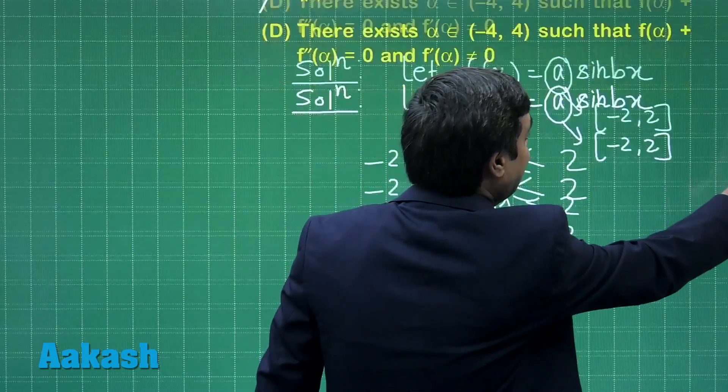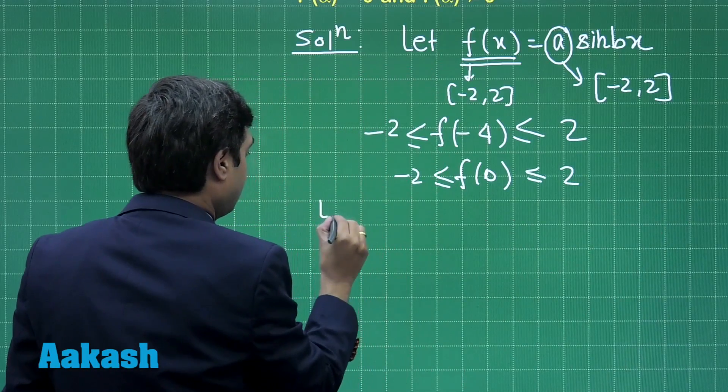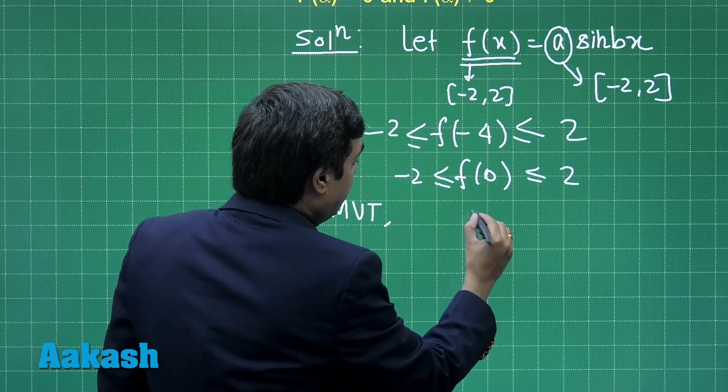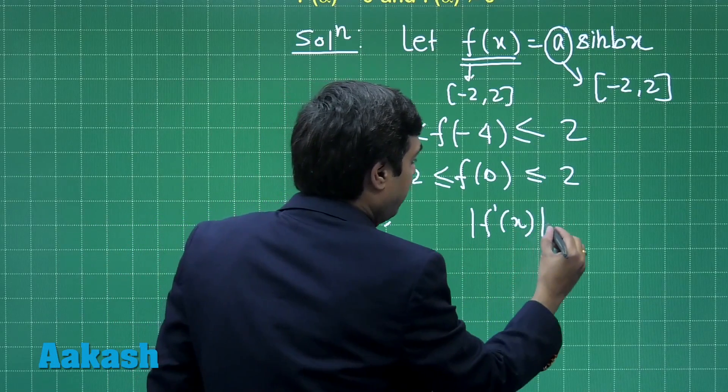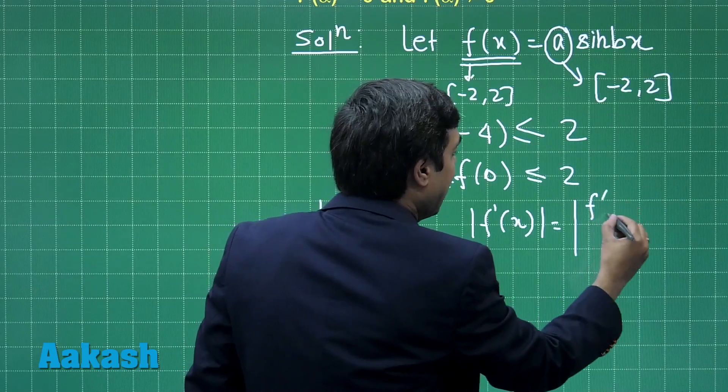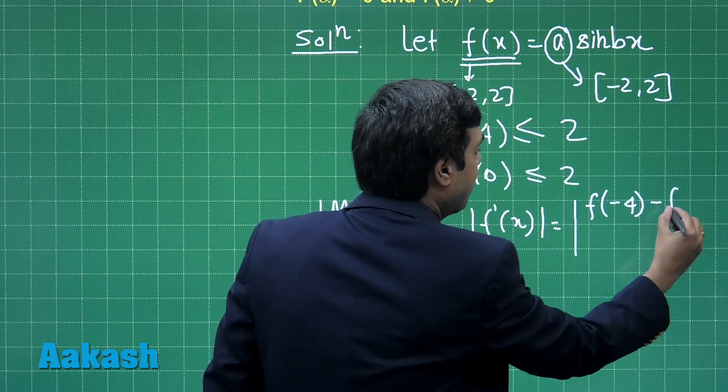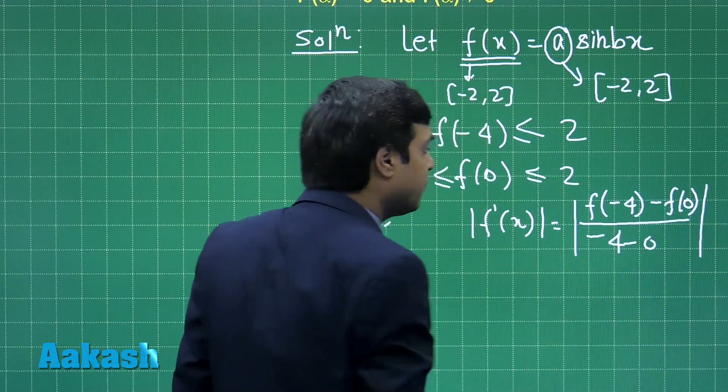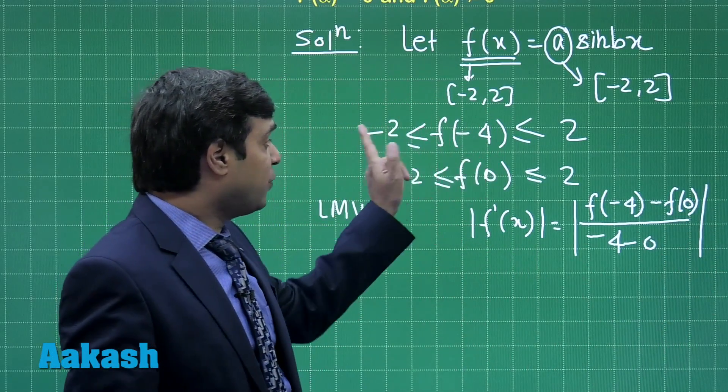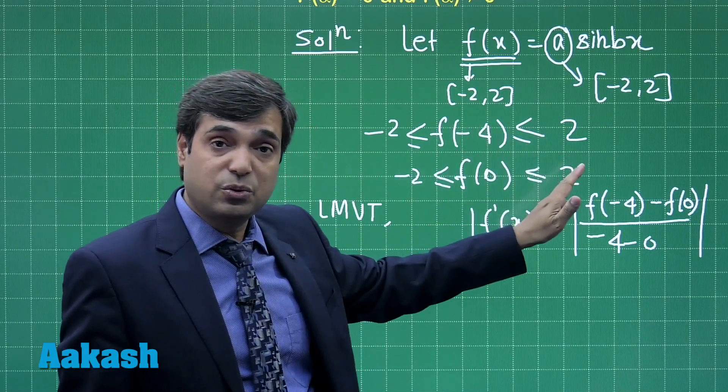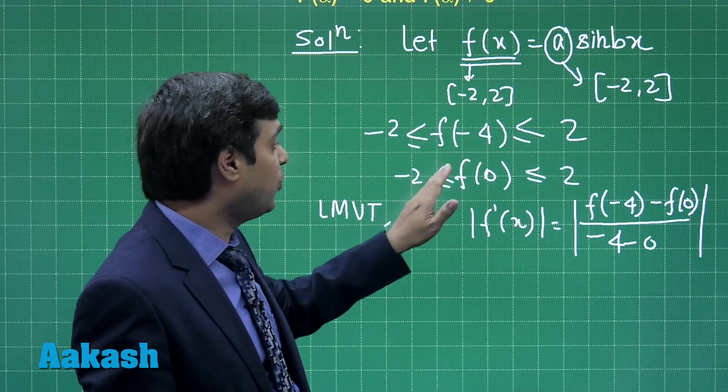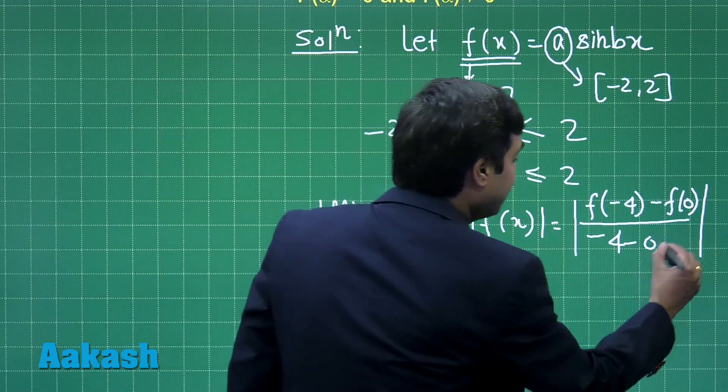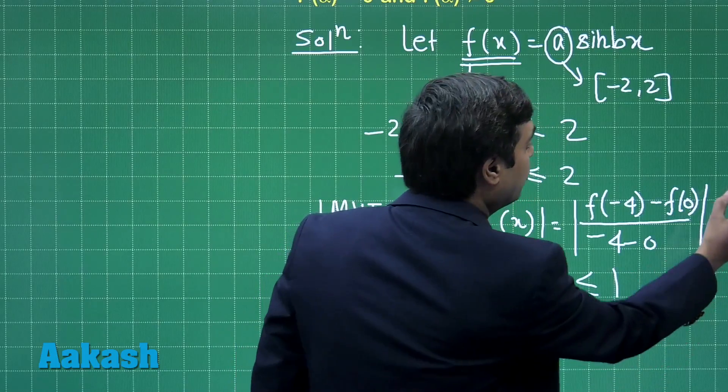If I apply a Lagrange mean value theorem, using LMVT we can say that mod f'(x) which is equal to mod f of minus 4 minus f(0) divided by minus 4 minus 0. f(minus 4) is between minus 2 to 2, f(0) is between minus 2 to 2, means f(minus 4) minus f(0) is between minus 4 and 4.